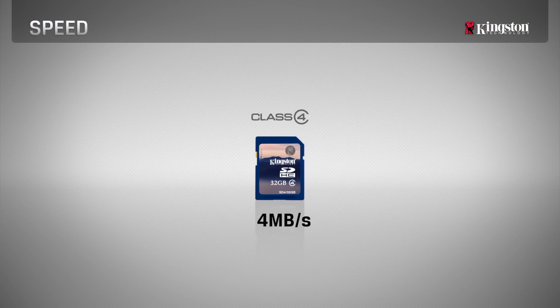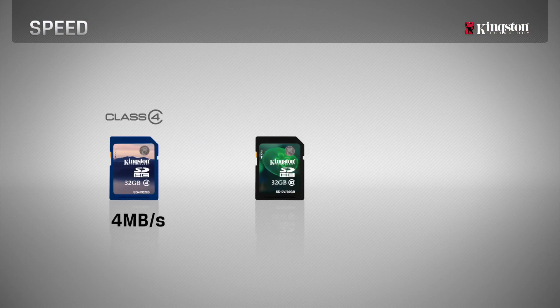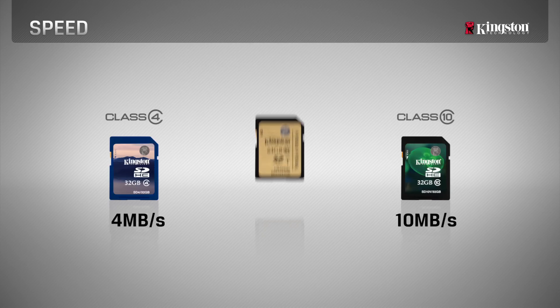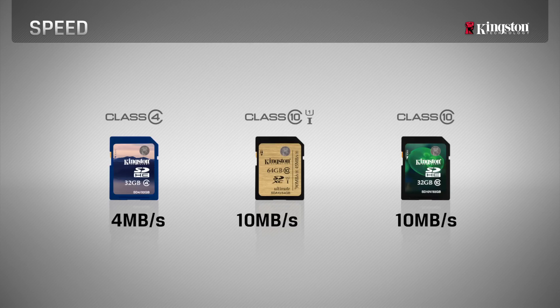Class 4 cards deliver a minimum speed of 4 megabytes per second, while Class 10 cards deliver a minimum of 10 megabytes per second. UHS-I cards also deliver a minimum of 10 megabytes per second and are capable of recording real-time broadcasts and HD videos.